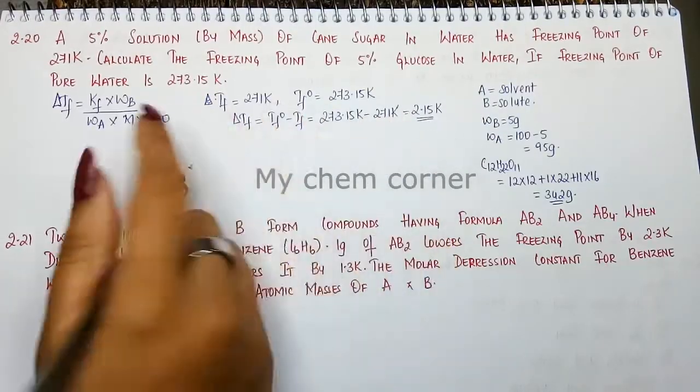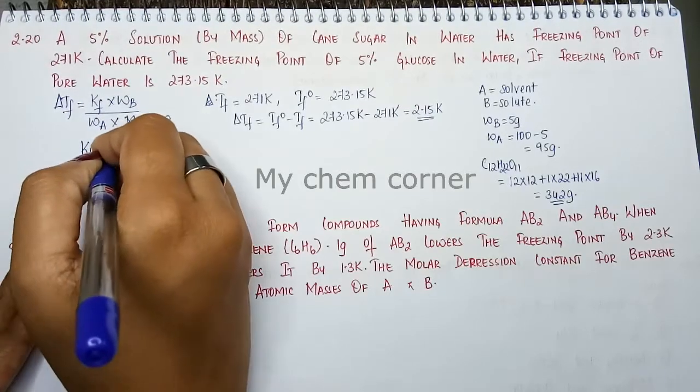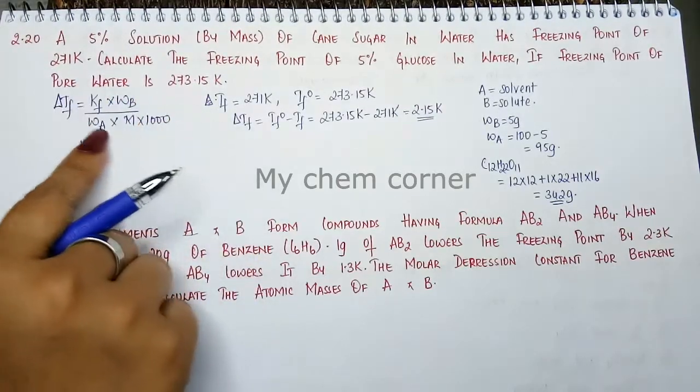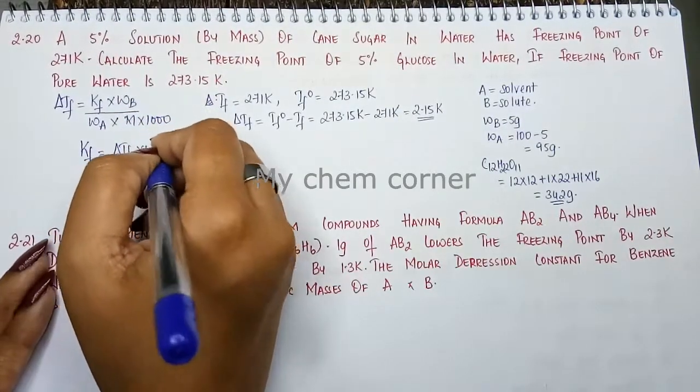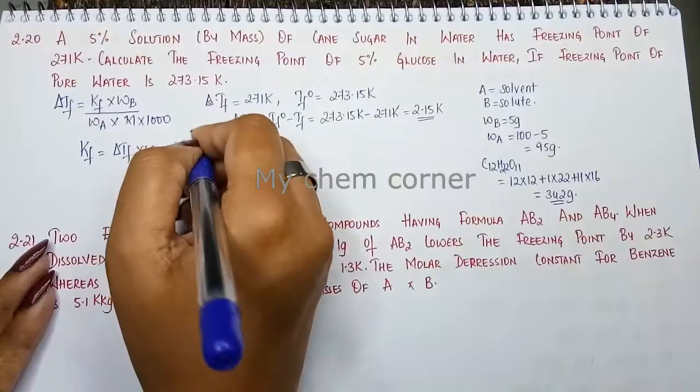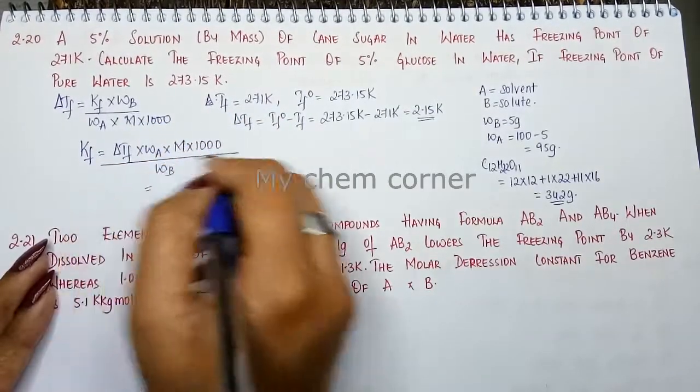So here we can calculate it as freezing point constant. We have to write down Kf is equal to, when we rearrange the formula, Kf is equal to delta Tf into Wa into M into 1000 divided by Wb.